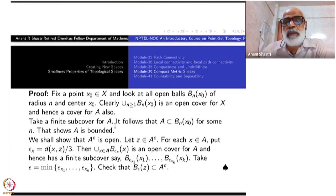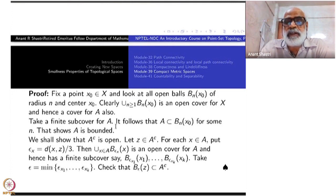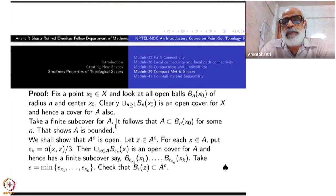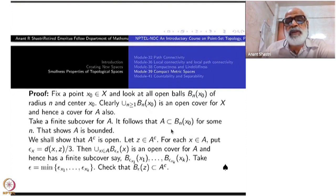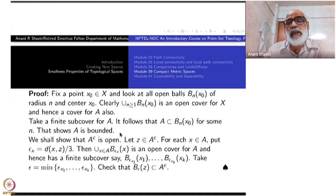Since A is compact, there is a finite subcover: B_{n₁}(x₀), B_{n₂}(x₀), and so on. If you take n larger than all n₁, n₂, ..., n_k, then B_n(x₀) will contain all those other balls of smaller radius, since all of them are centered at x₀. A subset contained inside a ball is bounded already. That shows A is bounded.